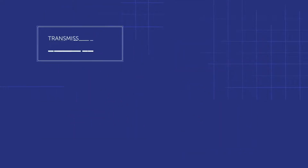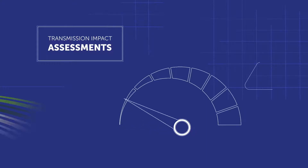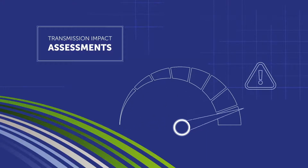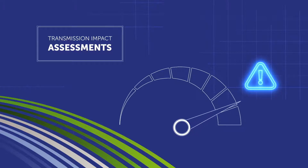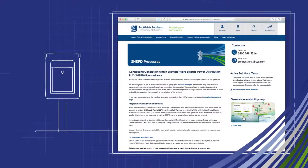Your connection offer may include a dependency on a transmission assessment. This occurs when the capacity at certain grid supply points cannot accommodate your connection capacity. Where this occurs, an application to Scottish Hydroelectric Transmission Limited is required. Your account manager will discuss with you whether statement of works, modification to the application, and or securities and liabilities may be applicable.